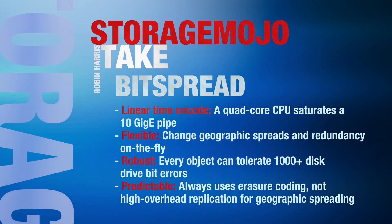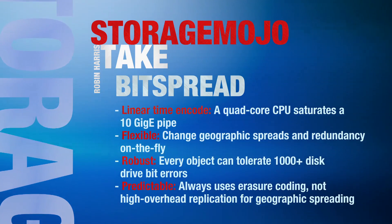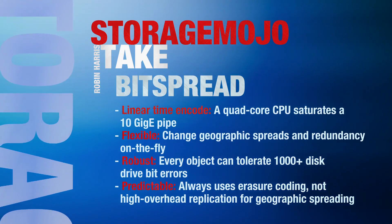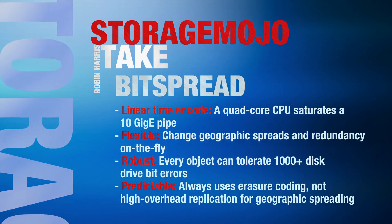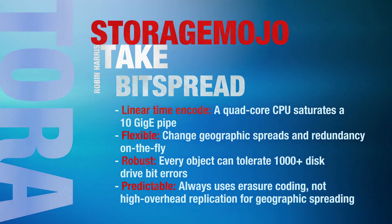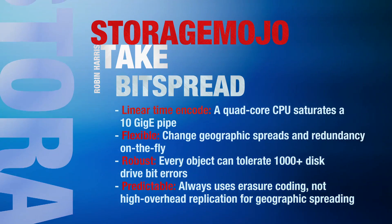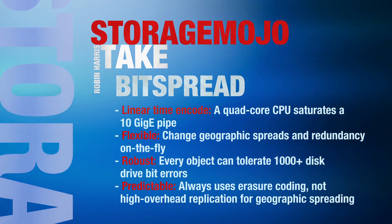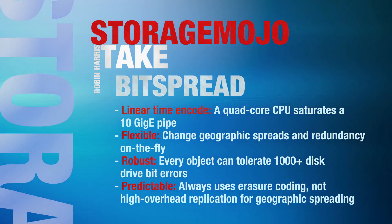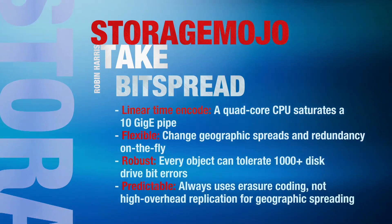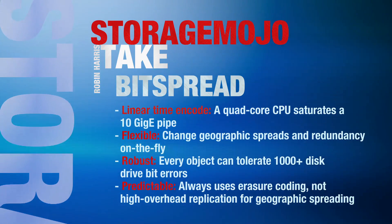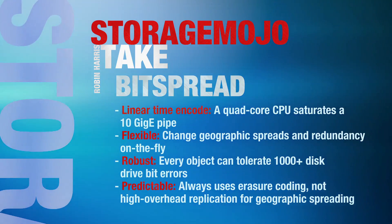AmplaData's secret sauce is their bit-spread rateless erasure coding implementation — a product of over 100 man-years of development, used in over 1,300 deployed customer systems. Bit-spread is fast, efficient, flexible, robust, and predictable.